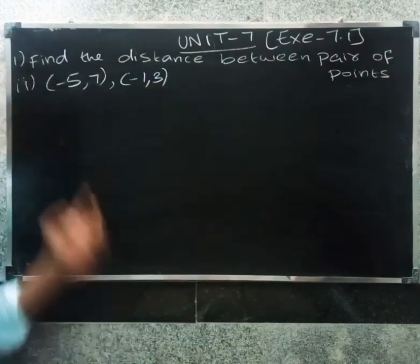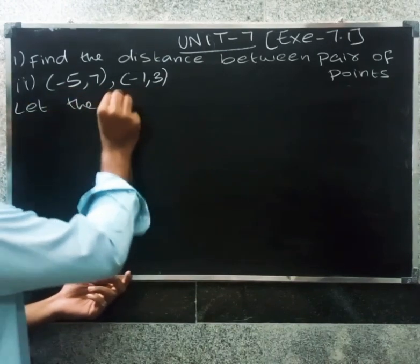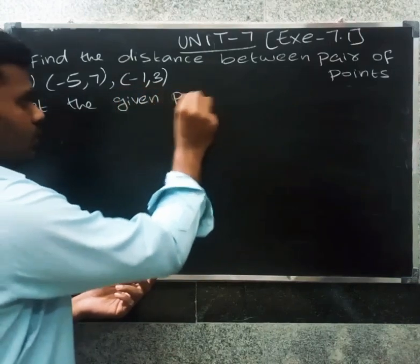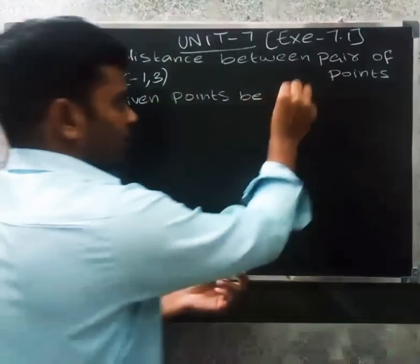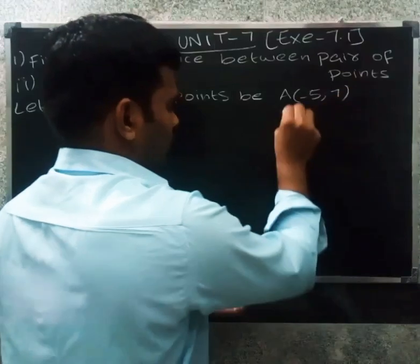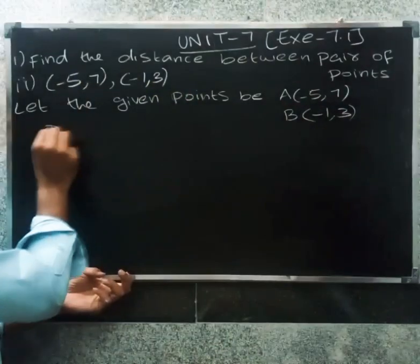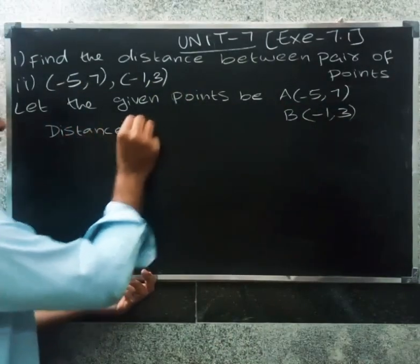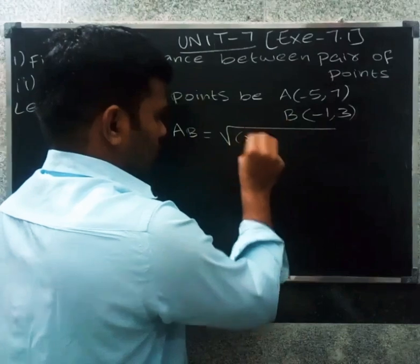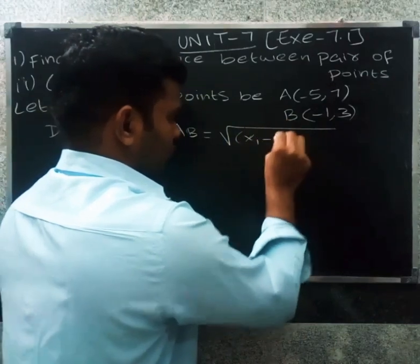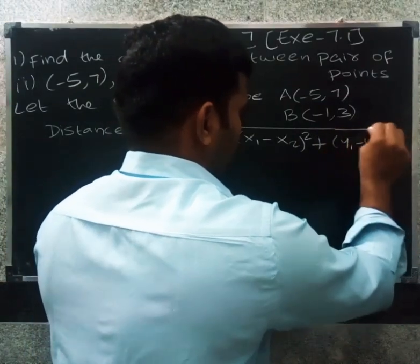Second question: find the distance between the points (−5, 7) and (−1, 3). Let the given points be A(−5, 7) and B(−1, 3). The distance formula is: AB = √[(x1 − x2)² + (y1 − y2)²].